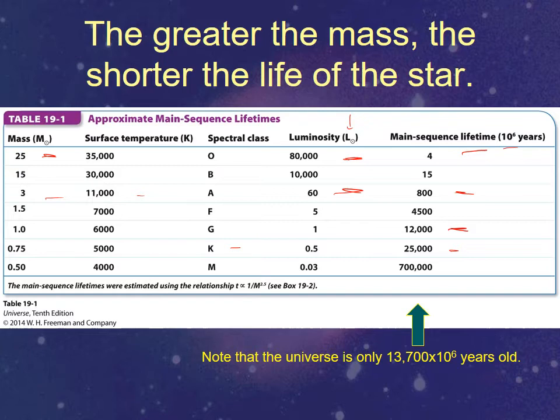That's important because the entire universe is only 13.7 billion years old. That means these little dim stars down here, the K's and the M's, have never died. None of them, ever. The universe is not old enough for any of them to have died. And so anyone that has made it is still around.